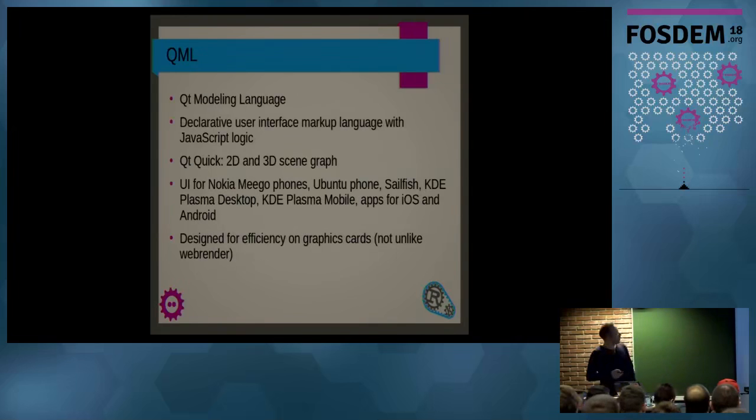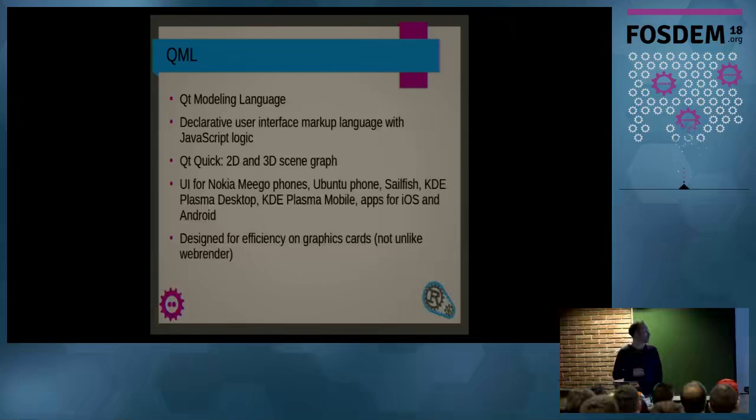Briefly about QML. Qt modeling language. This is a very nice innovation, which was triggered when Nokia bought Qt. They wanted to make phones with very performant and easy to write user interfaces. So what they did is they came up with a declarative user interface language. And it can do 2D programs or 3D even. And it's used in lots of mobile applications. So it started off at Nokia, Maemo phones. The Ubuntu phones are using it everywhere. Sailfish, KDE Plasma desktop, KDE Plasma mobile. And you can also use it for iOS and Android apps, if you like that stuff. Which apparently is the majority of the people. It's designed for efficiency on graphics cards. And that's actually, when we're talking about Rust, is not unlike WebRender, which has quite a lot of similarities in the way it's designed.